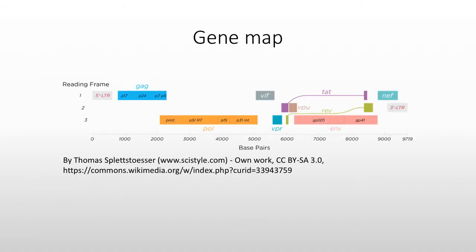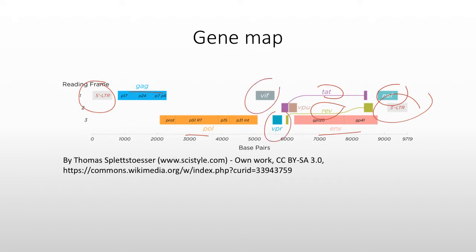Here again is a map of the genome. There's the 5' LTR and the 3' LTR. There's GAG, POL, and ENV, which are the structural proteins. Then there is TAT, REV, and NEF, which are your early proteins — TAT and REV being regulatory. Then VIF, VPR, and VPU are the accessory proteins.